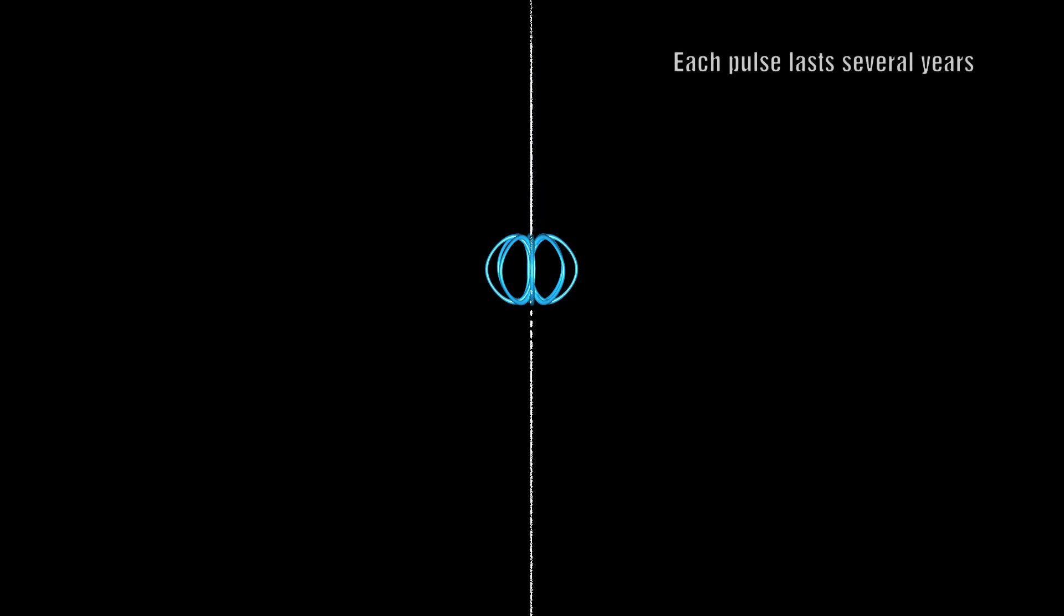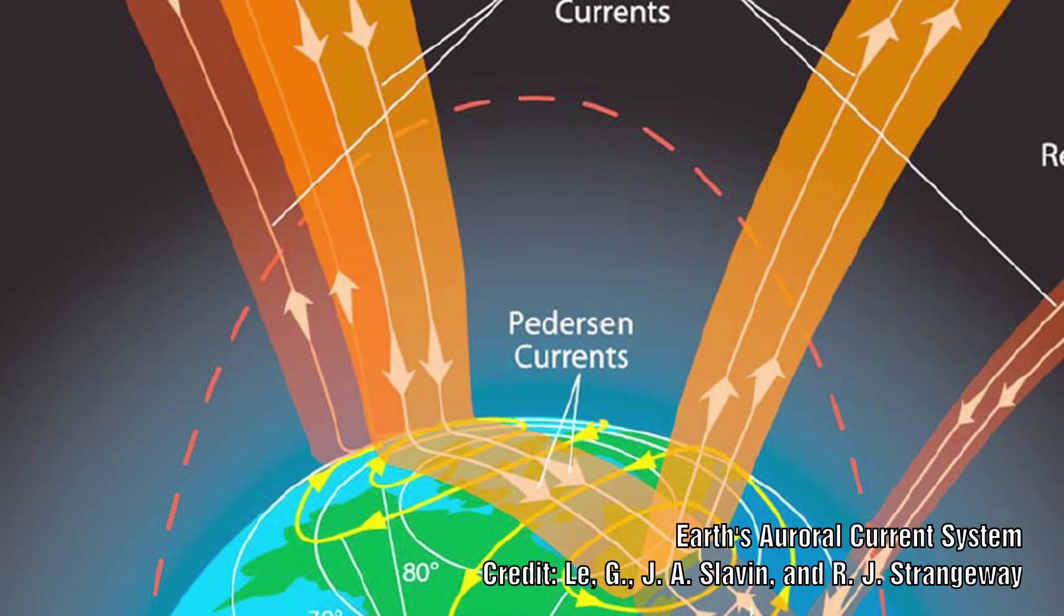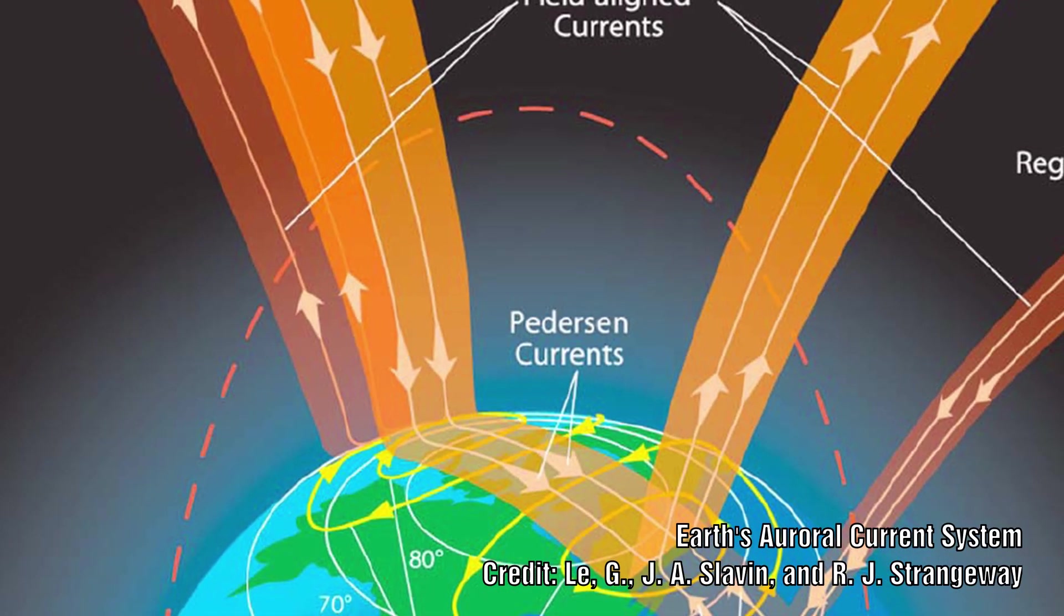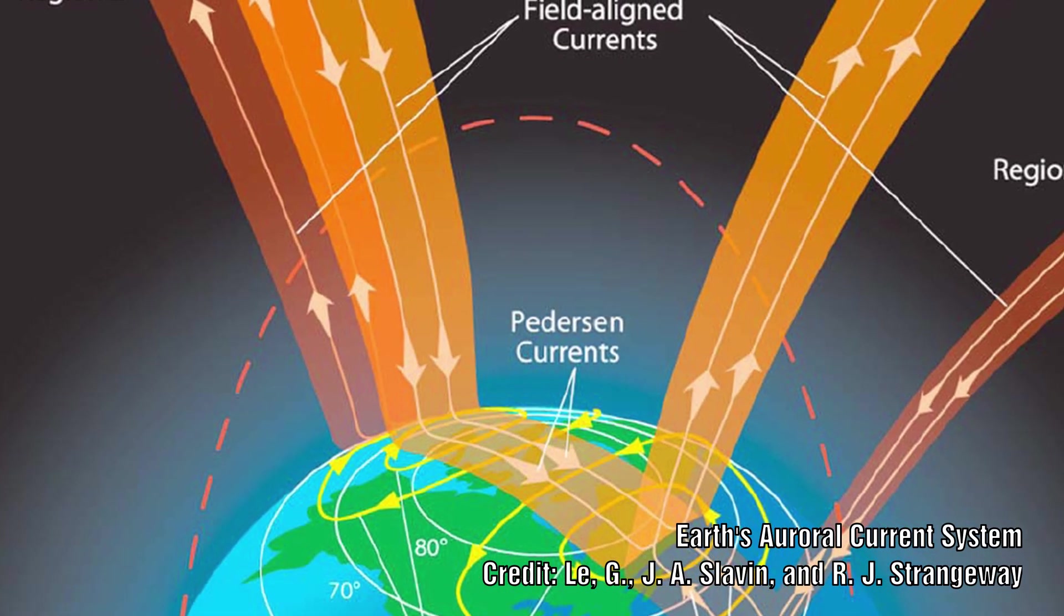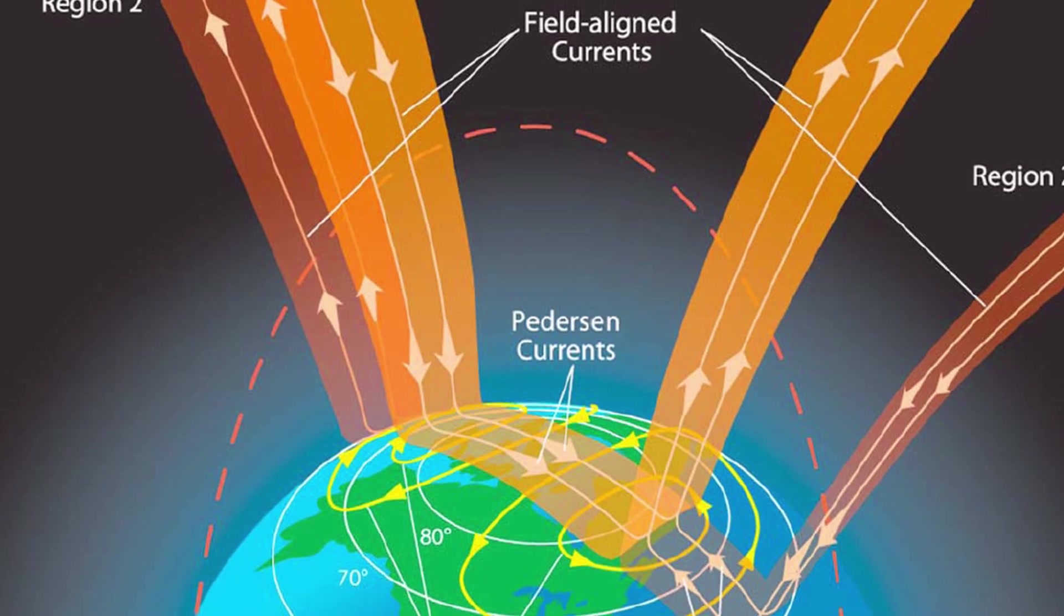But in learner's model, plasmoids create beams. So how do these beams interact with the Birkeland current? It is not an impossible thought as we know that there are currents which flow into and out of the Earth. But the outgoing currents are small, much smaller than what we are talking about here.